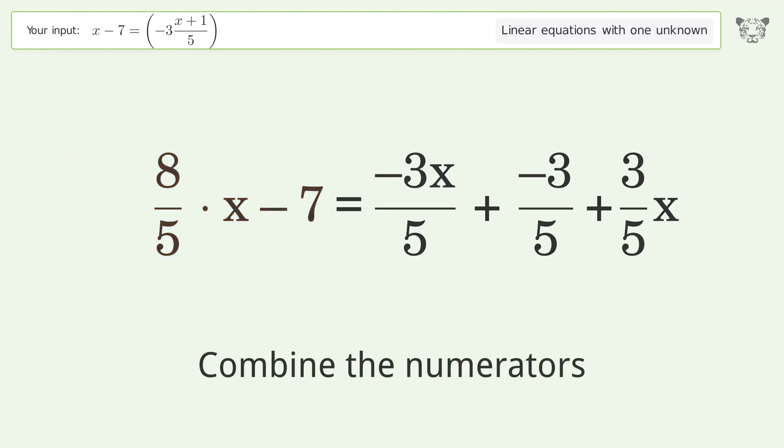Group all constants on the right side of the equation. Add 7 to both sides. Simplify the arithmetic.